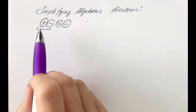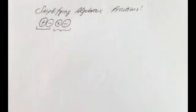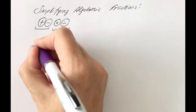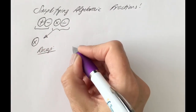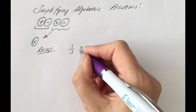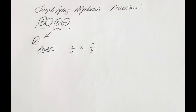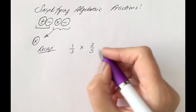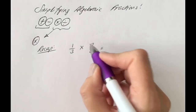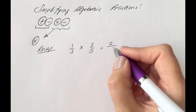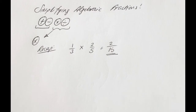We have looked at examples where we're adding and subtracting; we are now going to look at multiplying and dividing. Looking at multiplying first, let's do a little recap. If we were just dealing with numbers — one third times two fifths — when multiplying fractions, you just multiply along the top and multiply along the bottom. So it's one times two on the top, which is two, and three times five along the bottom, which is 15. Two over 15 is the answer.